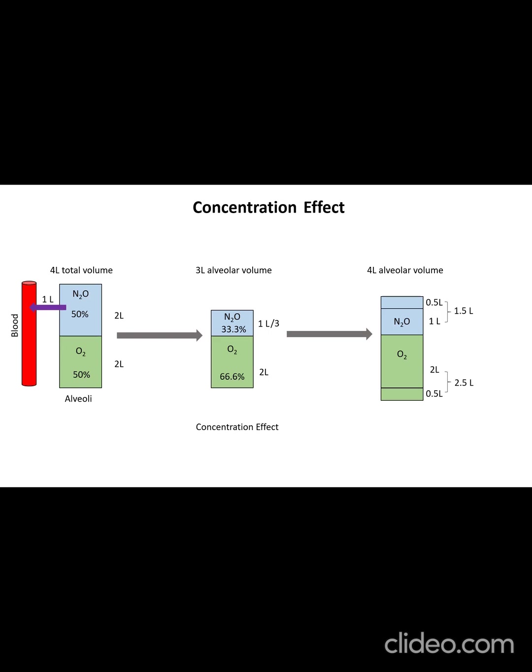The new concentration of nitrous oxide in the alveoli is 1.5 by 4 or approximately 37.5%. This is the second phase of the concentration effect, known as the augmented gas inflow effect or ventilation effect.